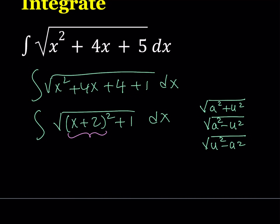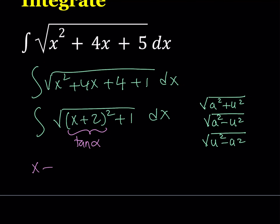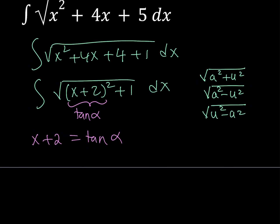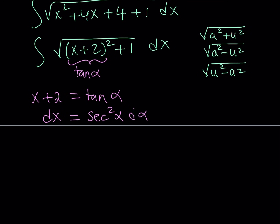I'm going to let x plus 2 equal tangent alpha. From here, tangent squared alpha plus 1 is equivalent to secant squared. So x plus 2 equals tangent alpha, and differentiating both sides, dx equals secant squared alpha d alpha. Now we're going to plug this in.